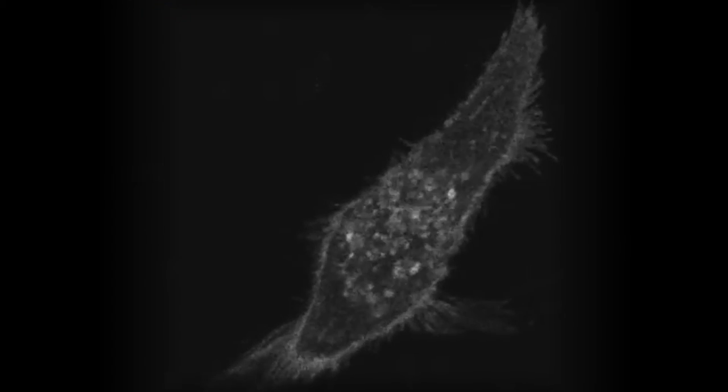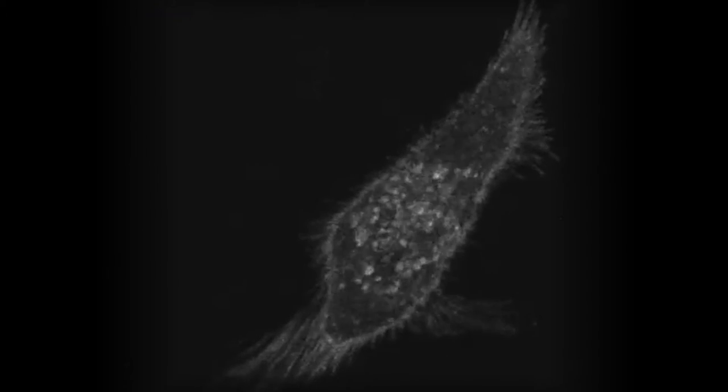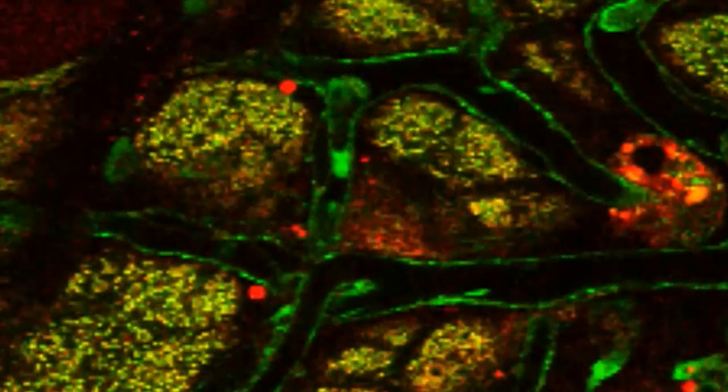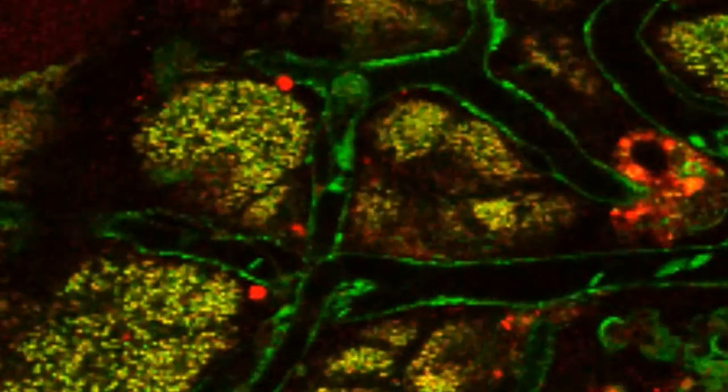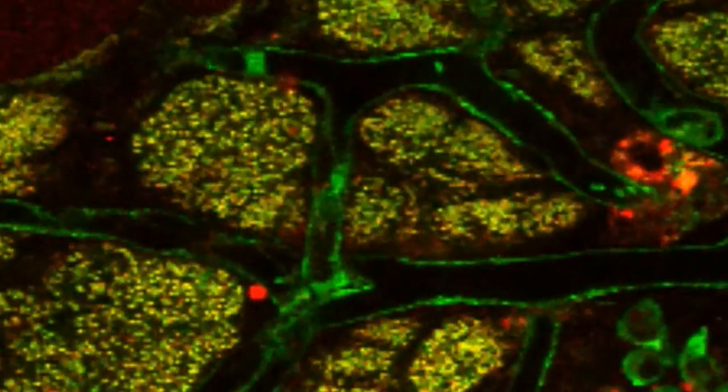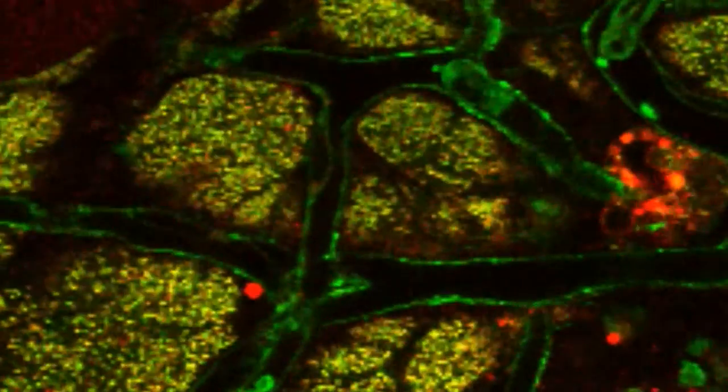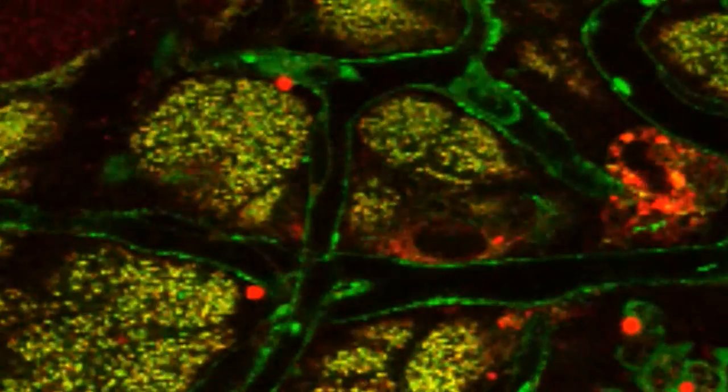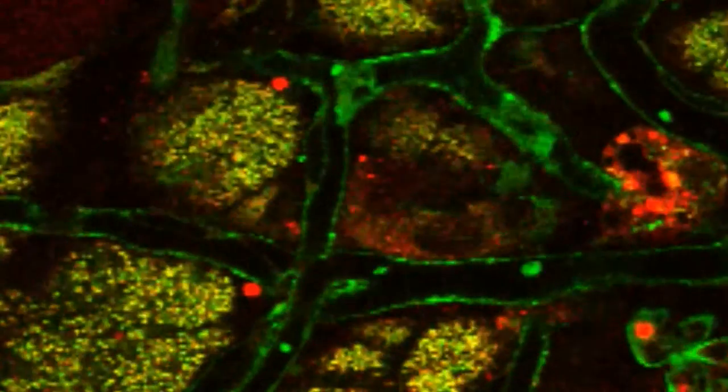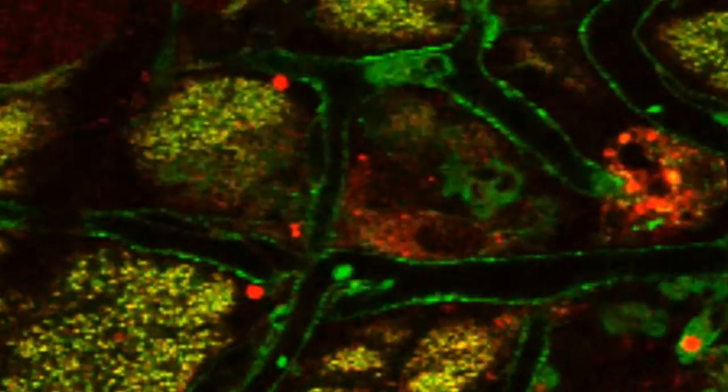We always ask ourselves, how do cells behave in their native environment? They are surrounded by thousands of different cells, by blood vessels that provide their nutrients, and by the extracellular matrix that provides support. We now have the ability to look at them in living tissues.